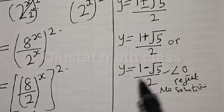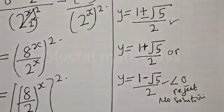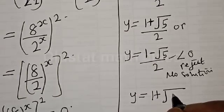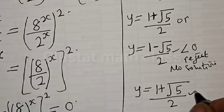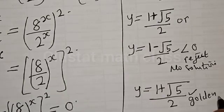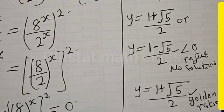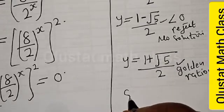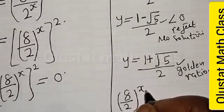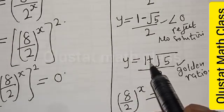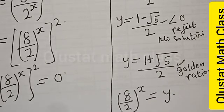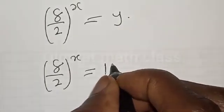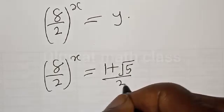We have y is equal to 1 plus square root of 5, divided by 2. This is equal to 1 plus or minus 2 approximately — this is the golden ratio. Remember that (8/2) raised to power s is equal to y, and our y is 1 plus square root of 5 divided by 2. So (8/2) raised to power s is equal to 1 plus square root of 5, divided by 2.